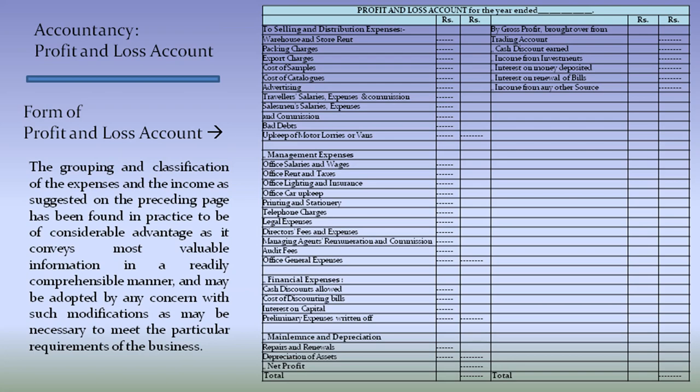The form of profit and loss account is shown on the right side. It contains on the debit side: selling and distribution expenses — warehouse and stores rent, packing charges, export charges, cost of samples, cost of catalogs, advertising, travelers' salaries, expenses and commissions, salesman salary expenses and commissions, bad debts, upkeep of motor, etc. And management expenses like office salaries and wages, office rent and taxes, office lighting and insurance, office car upkeep, printing and stationery, telephone charges, legal expenses, director's fees and expenses, managing agents' remuneration and commission, audit fees, and office general expenses.